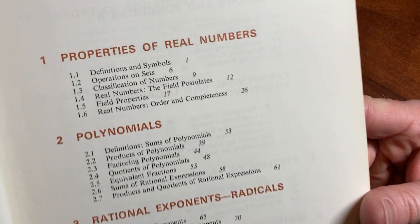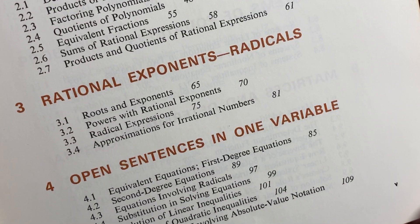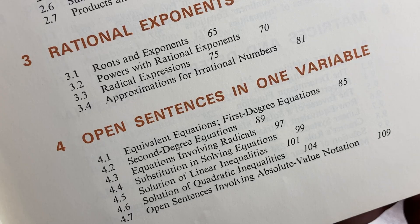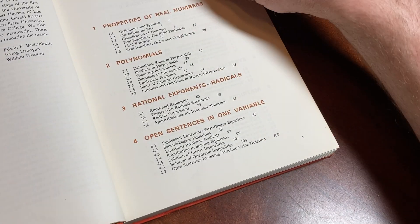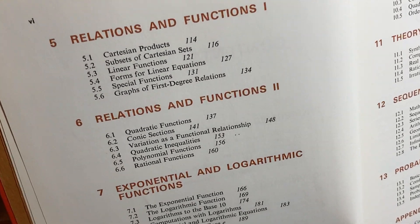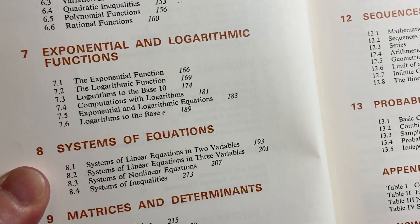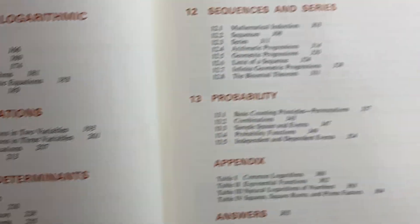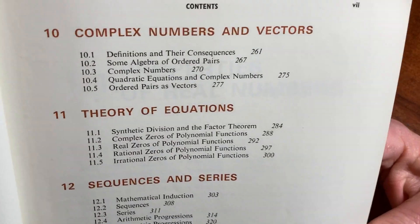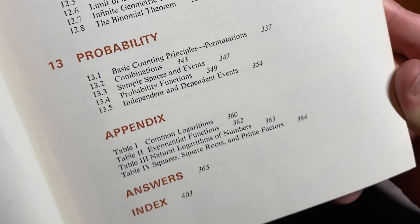And here are the contents. Properties of real numbers, polynomials, rational exponents and radicals, open sentences in one variable, relations and functions, exponential and logarithmic functions, systems of equations, matrices and determinants. It's got a lot of math for a college algebra book. Complex numbers and vectors, theory of equations, sequences and series, probability, and it has answers.